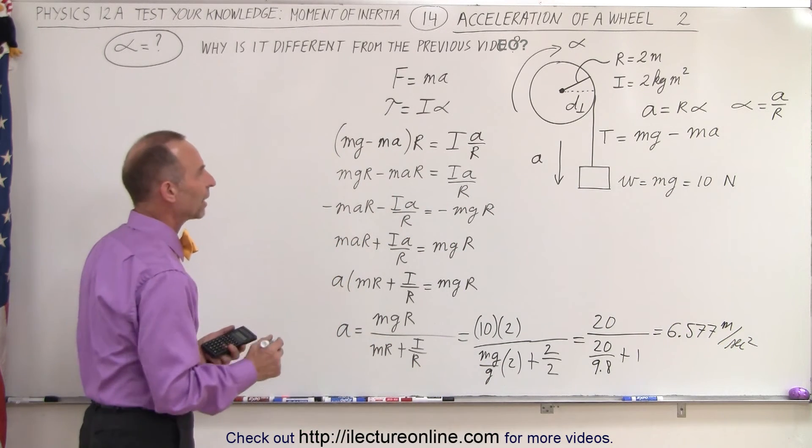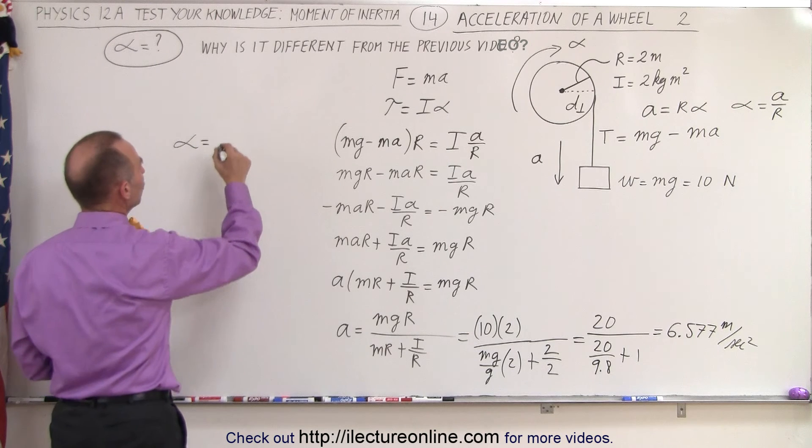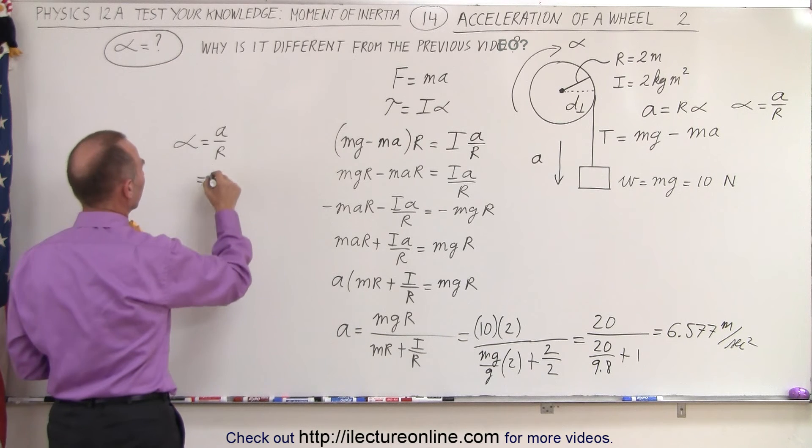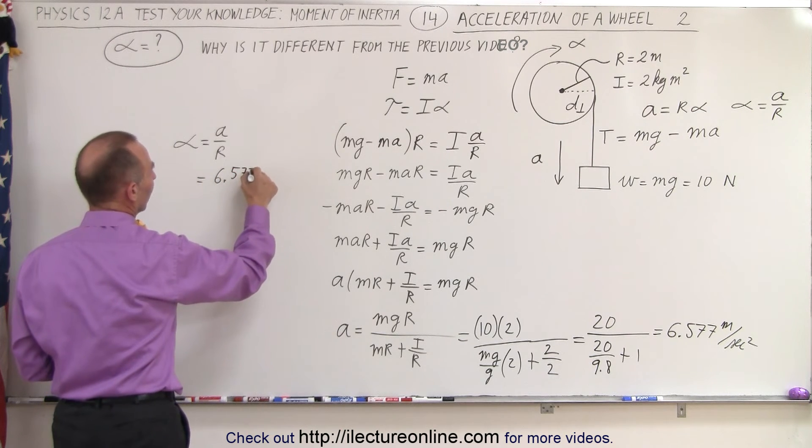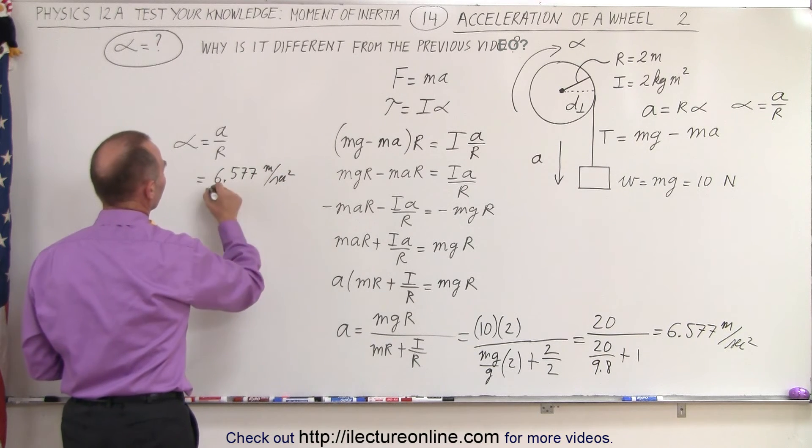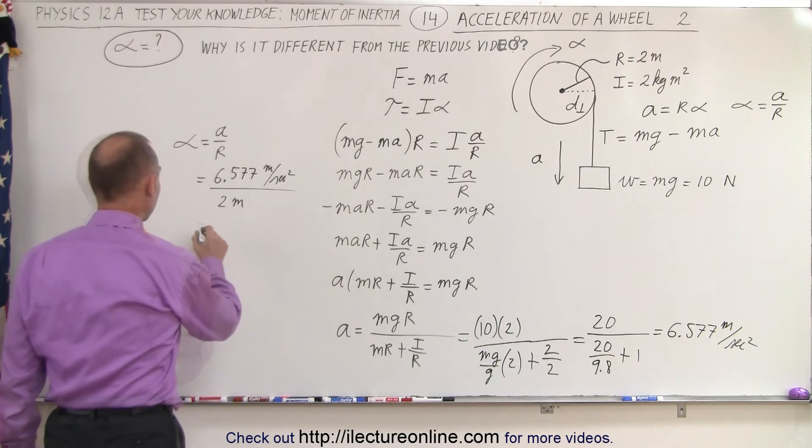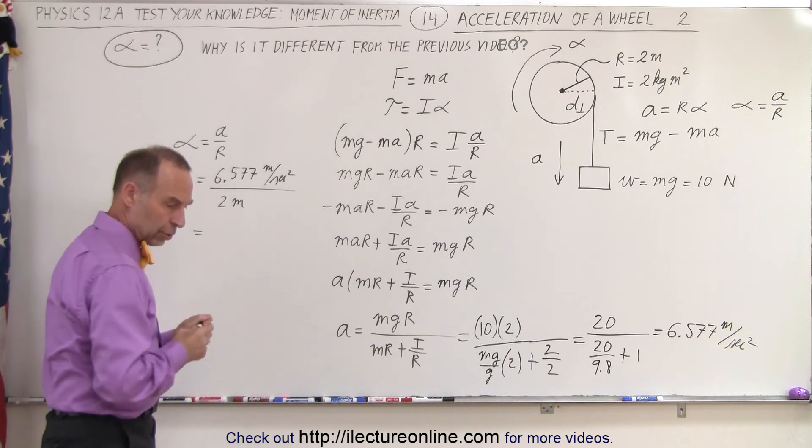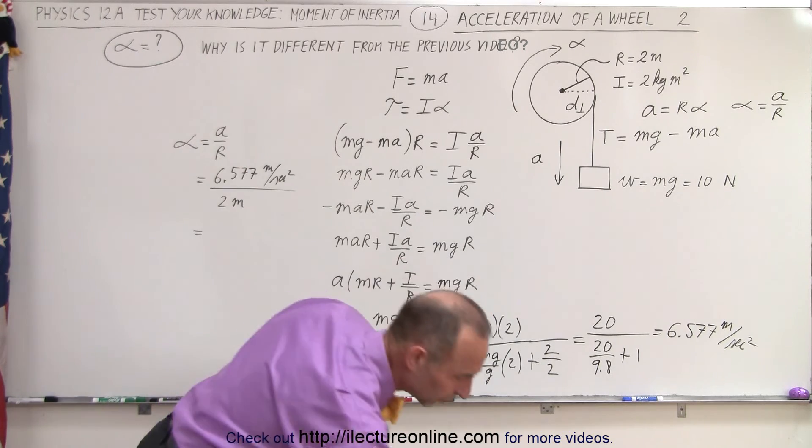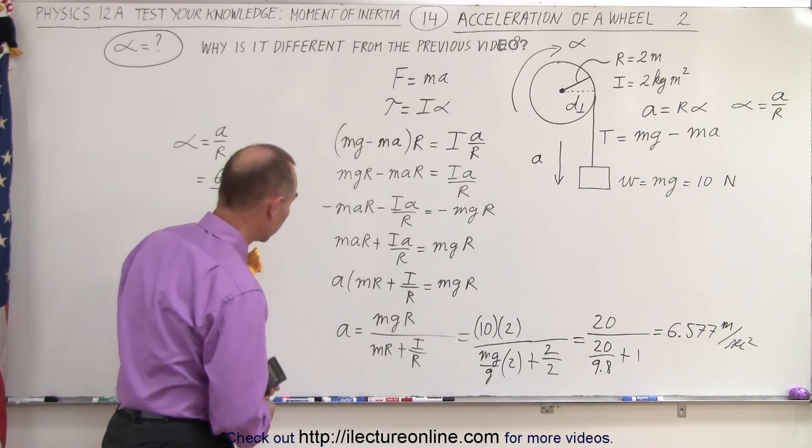So now we want to find the angular acceleration. The angular acceleration is equal to A over R. So in this case, A would be 6.577 meters per second squared, and we divide that by R, which is 2 meters.